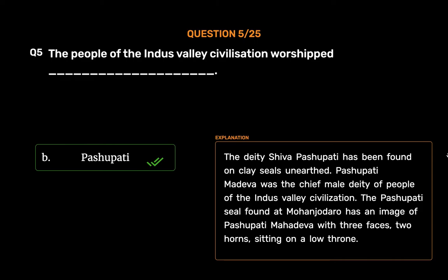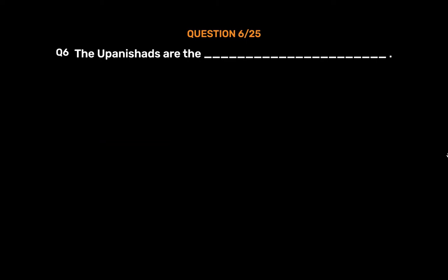The Pashupati seal found at Mohenjo-daro has an image of Pashupati Mahadeva with three faces, two horns, sitting on a low throne.